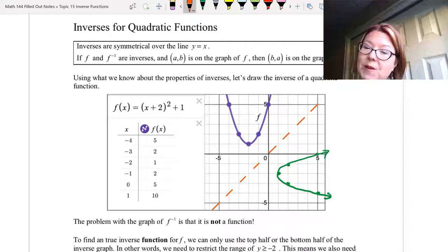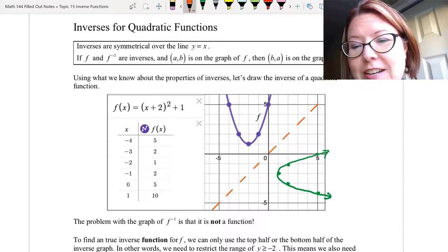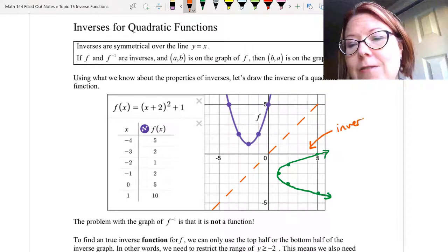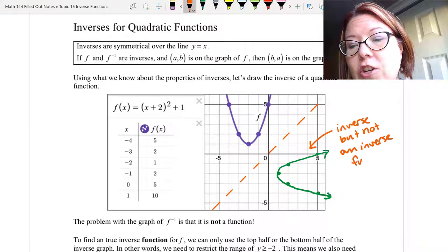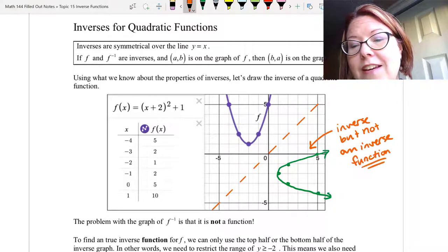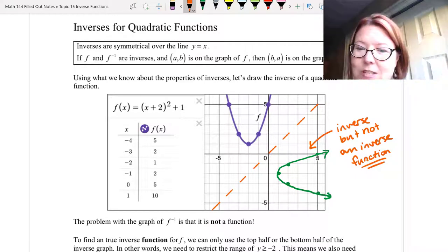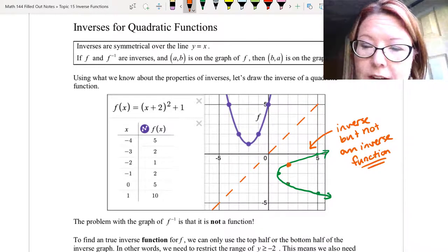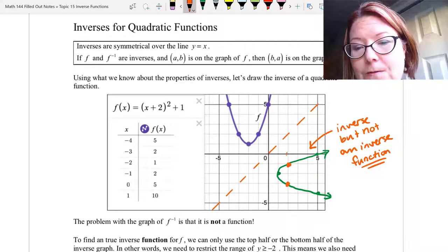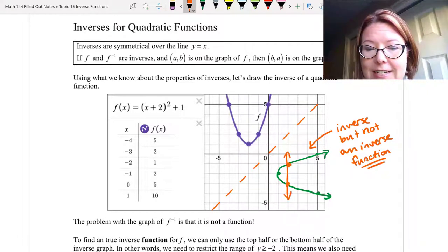But the problem we have is that this inverse that we've drawn, while it looks good as an inverse, it's an inverse but not an inverse function. And the key word there being function, it doesn't pass a vertical line test. We have x values with more than one y value, and that would fail on a vertical line test.